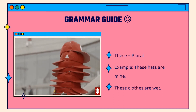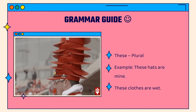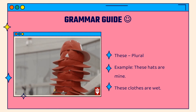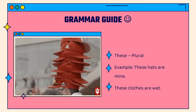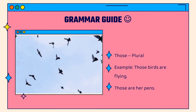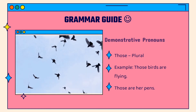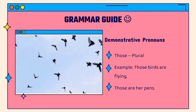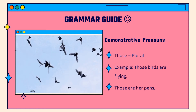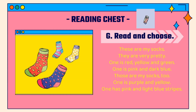Our grammar guide for today: first, 'these' — it's used as plural. For example, 'These hats are mine' or 'These clothes are wet.' Number two, 'those' — also used as plural. For example, 'Those birds are flying' or 'Those are her pens.'